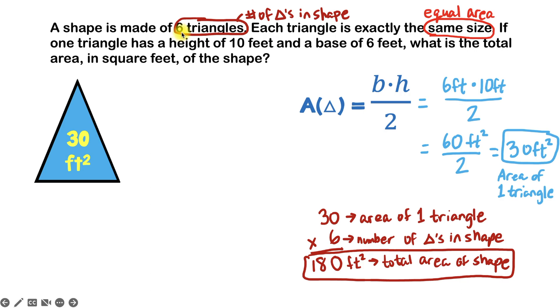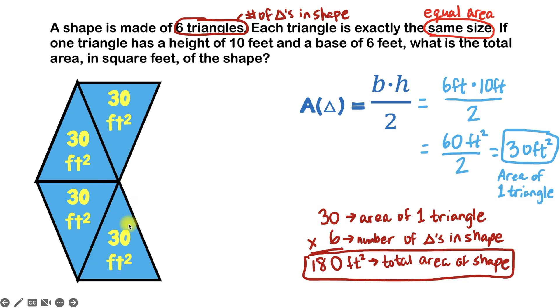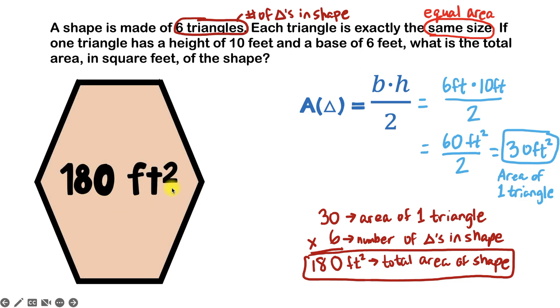And our shape has six triangles in it, so it might look something like this. Here's the first triangle in the shape, the second triangle, the third triangle, the fourth triangle, the fifth triangle, and the sixth triangle. You might have something that looks different, but it doesn't matter because they all have the same area. But if I added up all these 30s, I would end up with a shape that has a total area of 180 square feet.